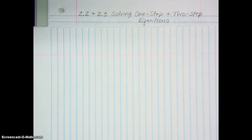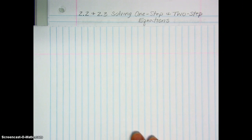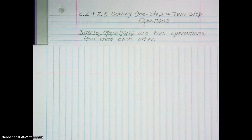When you solve an equation, you're trying to determine what the variable needs to be in order to make the equation true. We often can do something called inverse operations, which are two operations that undo each other — inverse meaning opposites, so they're opposites of one another.